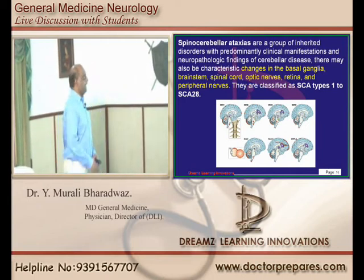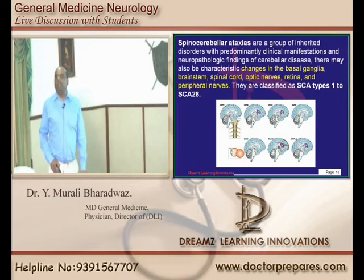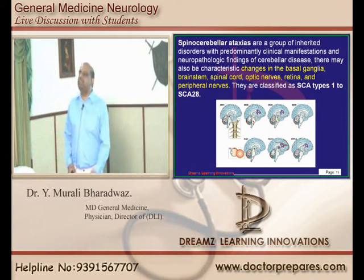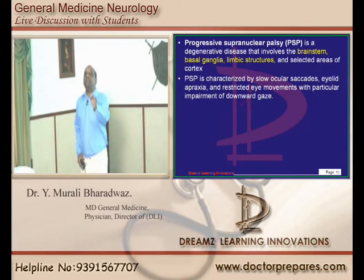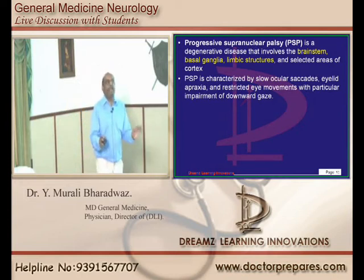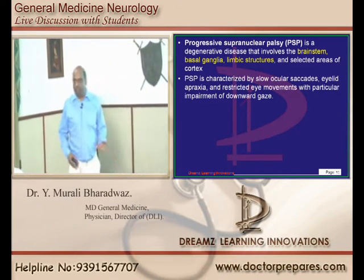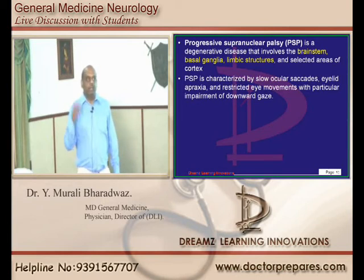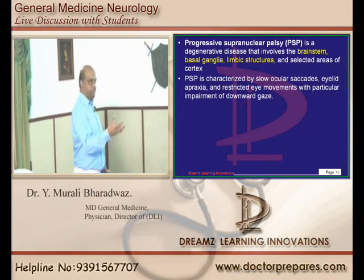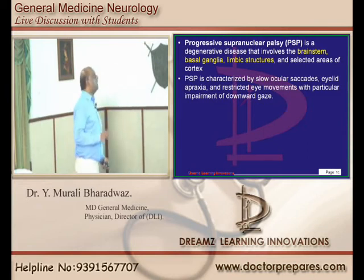Spinocerebellar ataxias are inherited disorders involving the basal ganglia, brain stem, spinal cord, optic nerve, retina, and peripheral nerves — subdivided into types 1, 2, and so on. Progressive supranuclear palsy involves degeneration of the basal ganglia, limbic structures, selected areas of the cerebral cortex and brain stem. Patients will have restricted eye movement, particularly impairment of downward gaze — if you cannot look down, you fall — along with forgetfulness and rigidity in walking.